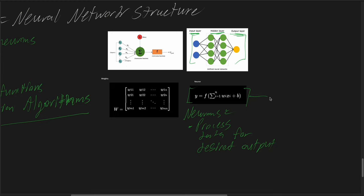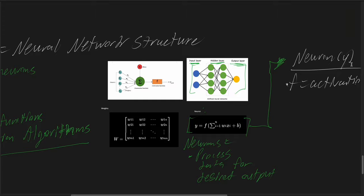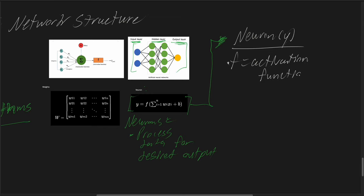To give a breakdown of the math really comprised in neural networks, focusing on a single neuron: the neuron output will be denoted as y, f is known as the activation function, and w_i refers to the weights of the connections to the neuron.